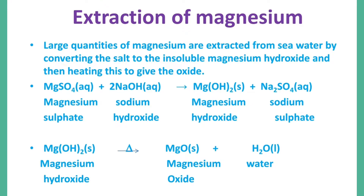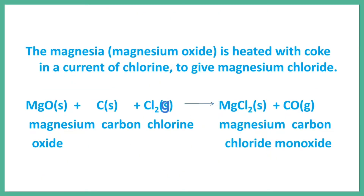Now to check the main topic, we will be using magnesium oxide. The magnesium is using magnesium to be used in the magnesium. The equation is MgO plus C plus Cl2, giving MgCl2 plus CO.